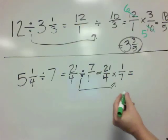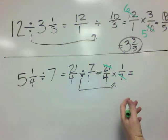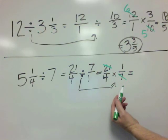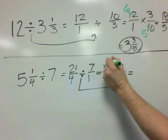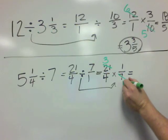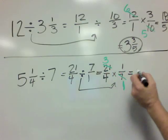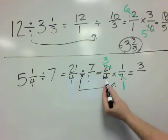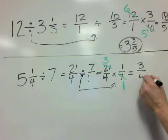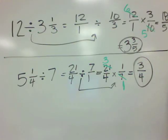And I like to cross cancel. It's an optional step, but I like to do it because it saves time later. 21 and 7 are both divisible by 7, so 21 divided by 7 is 3, 7 divided by 7 is 1. So now we've got 3 times 1 in the numerator is 3, we've got 4 times 1 in the denominator is 4. And 3 fourths cannot be simplified in any way, so that is our final answer.